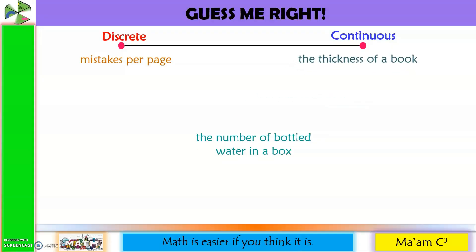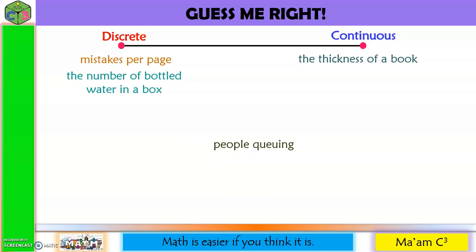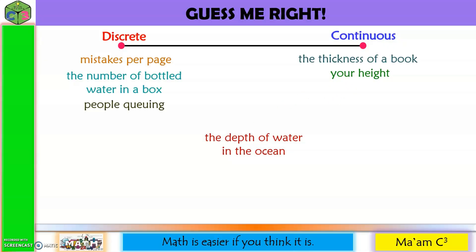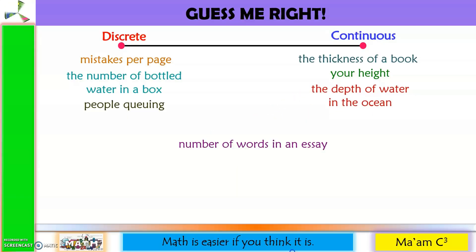The number of bottled water in a box goes to discrete. People queuing is also discrete. Your height is continuous. The depth of water in the ocean is also continuous. The number of words in an essay is discrete.